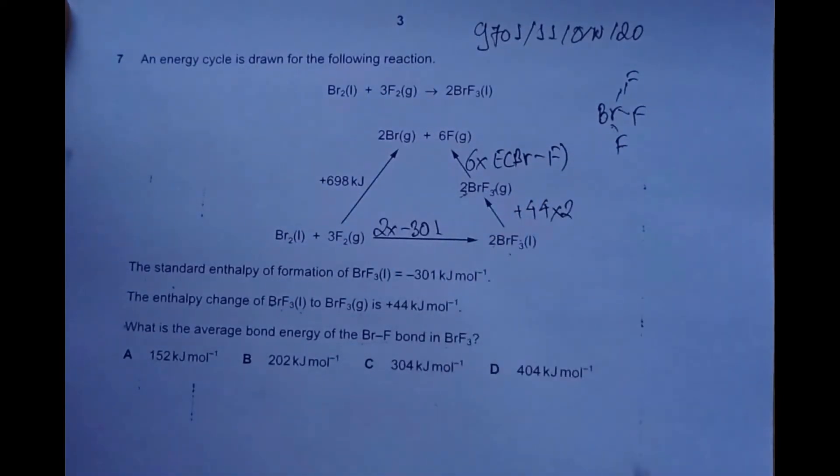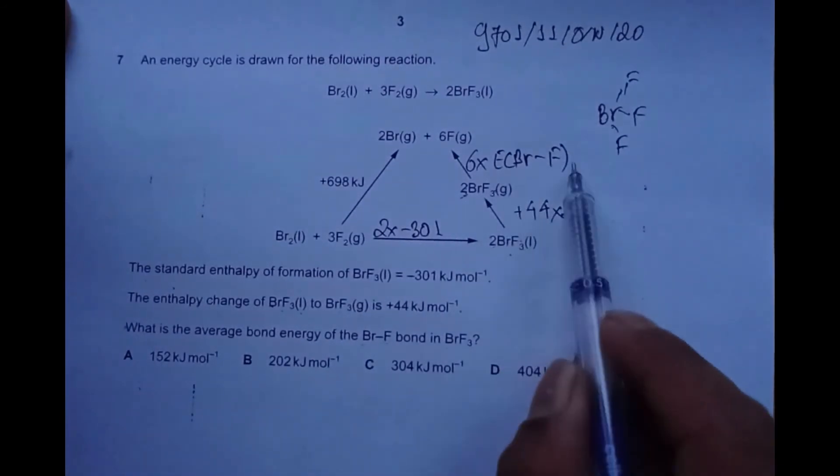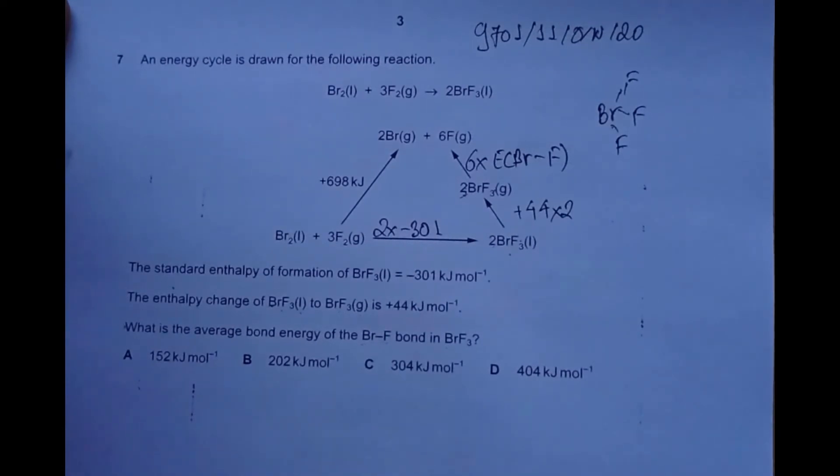Since we have the Hess cycle, we can use basic addition and subtraction to figure out this bond energy as it's the only unknown variable.